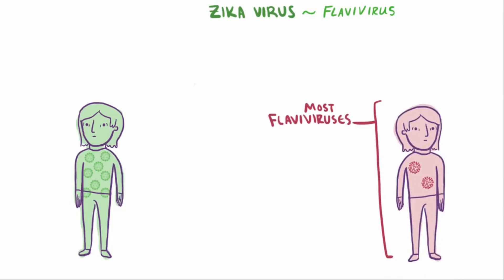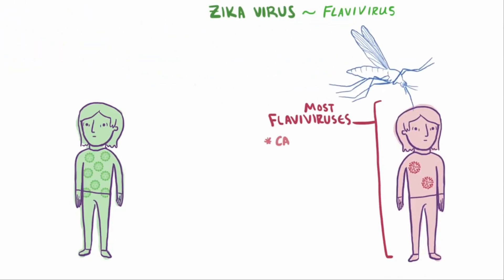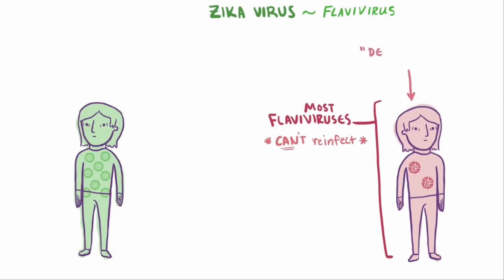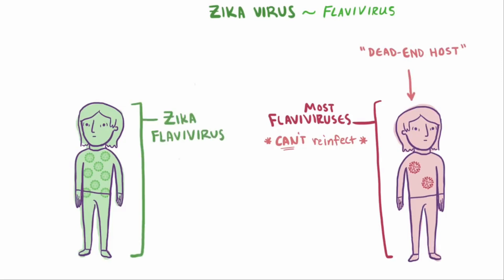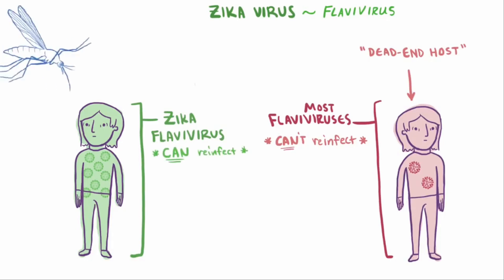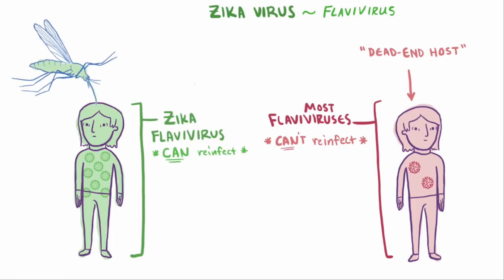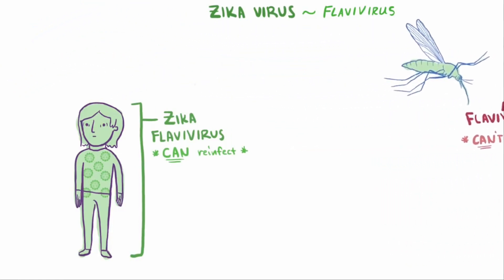With most flaviviruses, the virus isn't able to replicate enough in the human host to actually be able to reinfect another mosquito, and so the human is considered a dead-end host. However, the Zika virus, along with yellow and dengue fever, is well enough adapted to human hosts such that it can multiply to a point where it can reinfect another unsuspecting mosquito, which can then go on to infect more people.